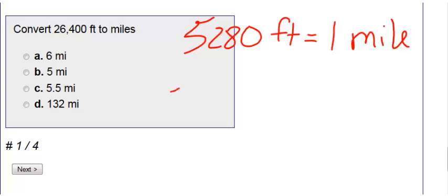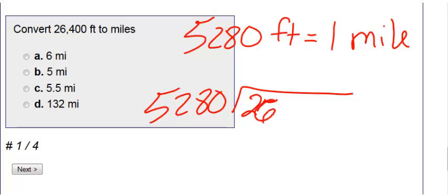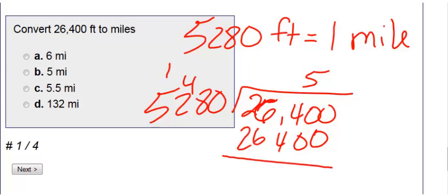Therefore I need to take 5,280 and divide it into 26,400. So let's try 5. 5 times 0 is 0, 5 times 8 is 40, 5 times 2 is 10 plus my 4 is 14, 5 times 5 is 25 plus my 1 is 26. It goes in evenly, therefore we get an answer of 5.